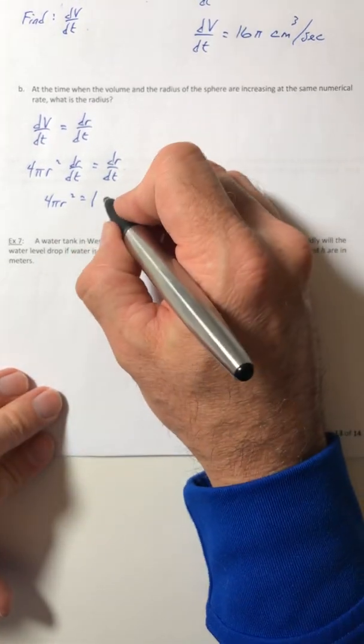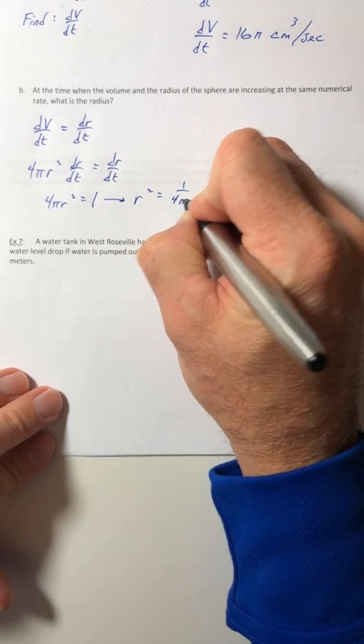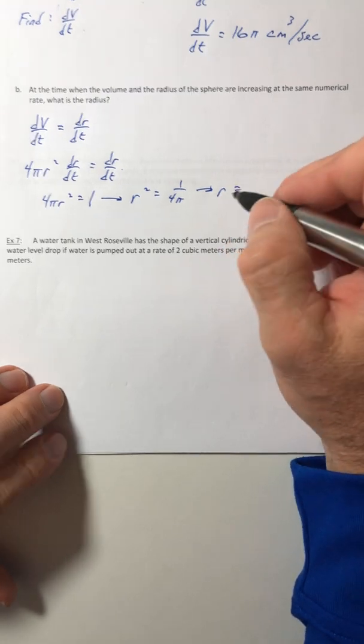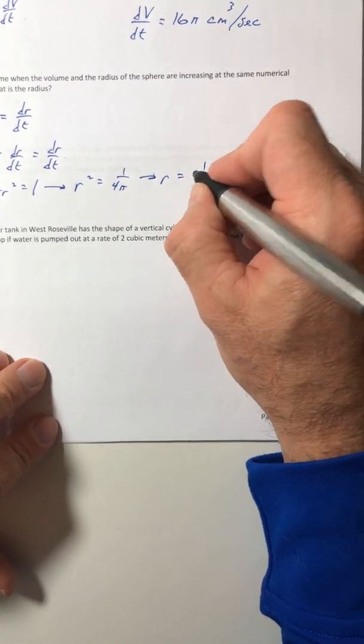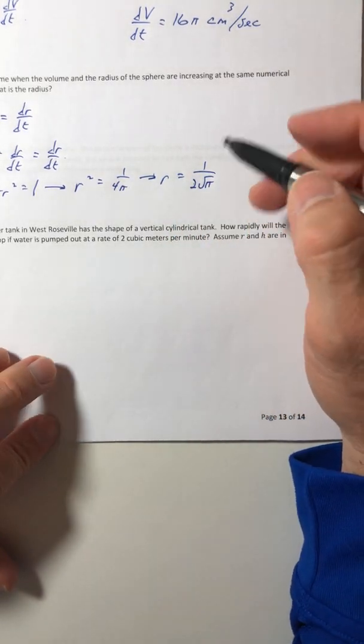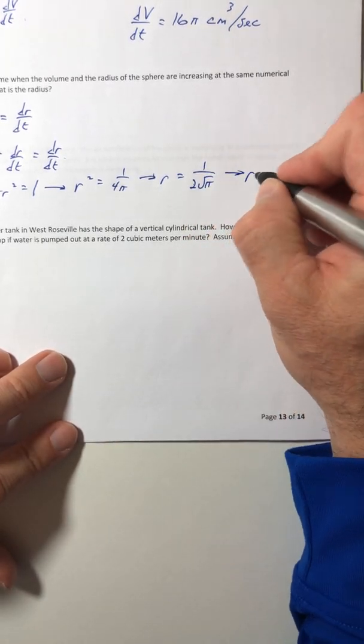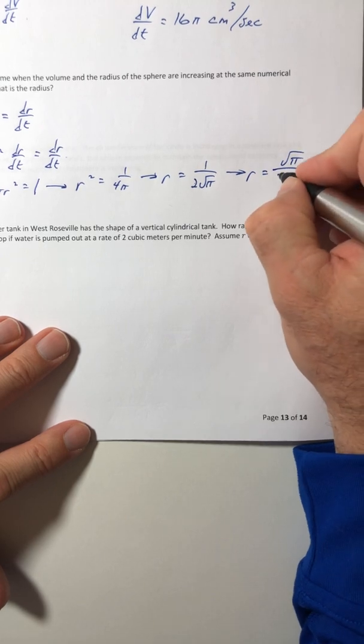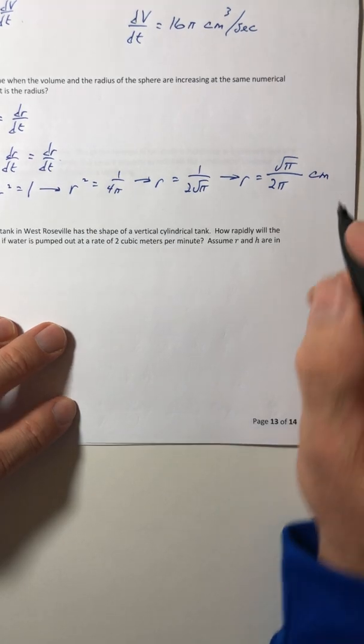So then I just have to solve from here. r squared is 1 over 4 pi. Square root it. And it's a length so I don't need the plus or minus. It's just positive. 4 roots into 2. The pi doesn't so it stays inside the radical. And then if I rationalized it, root pi over 2 pi and then the units centimeters.